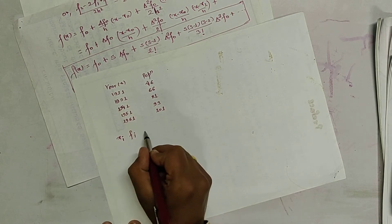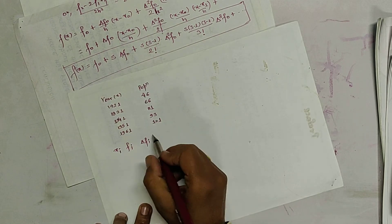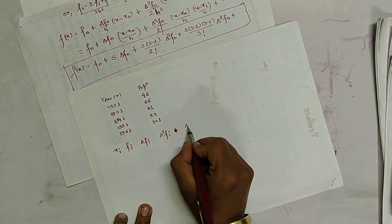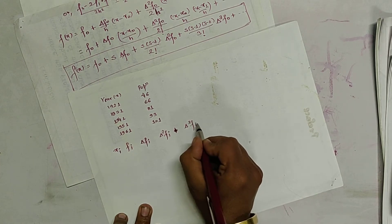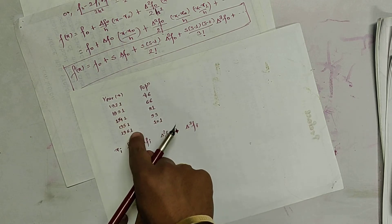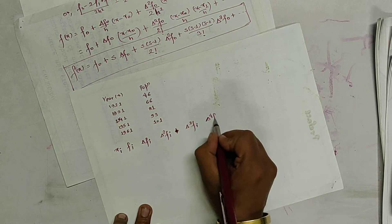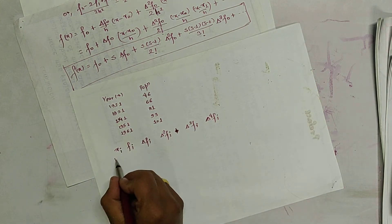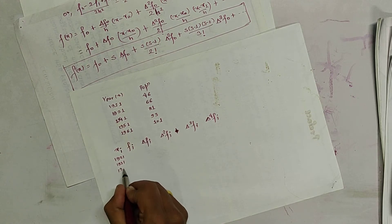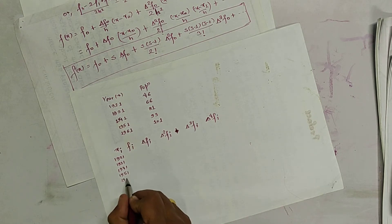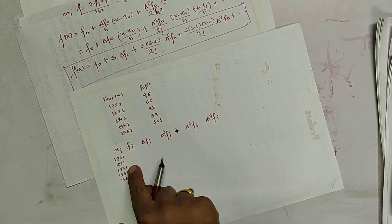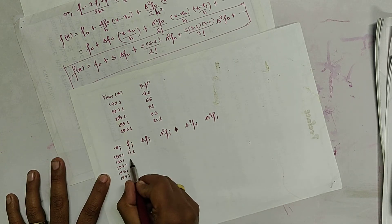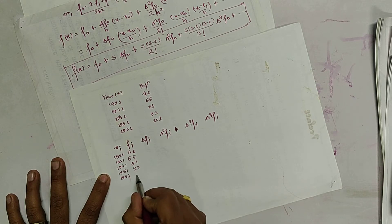We need to compute delta f_i, delta² f_i, delta³ f_i, and delta⁴ f_i. The x values are 1921, 1931, 1941, 1951, 1961 and the f_i values are 46, 66, 81, 93, 101. Note that the data are evenly distributed with a difference of 10, so we can use Newton's forward interpolation. The first differences are: 66 - 46 = 20; 81 - 66 = 15; 93 - 81 = 12; 101 - 93 = 8.